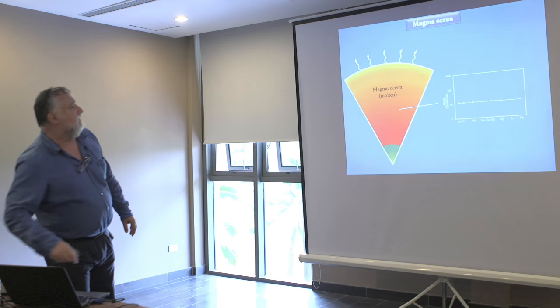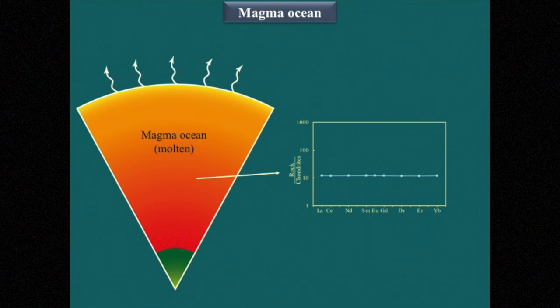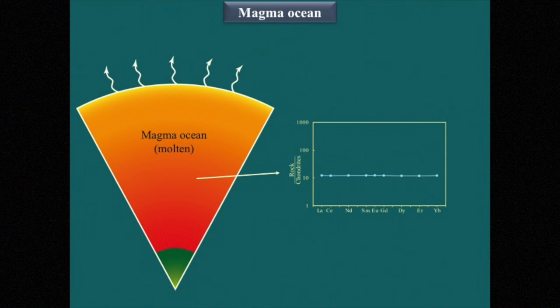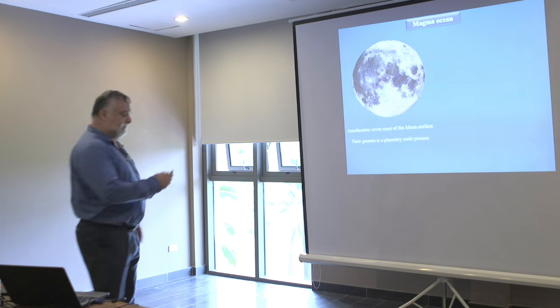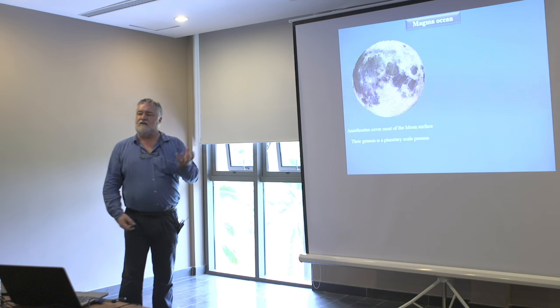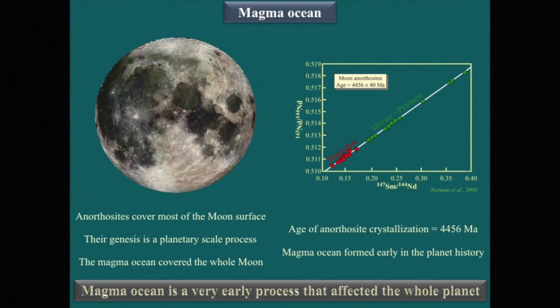If we start with a homogeneous magma ocean, we can evolve toward an anorthositic plagioclase crust with one kind of rare earth pattern, and a lower mantle with a complementary pattern. These two patterns derive from a single flat pattern at the beginning. So the Moon results from differentiation of a magma ocean. Anorthosites are found almost everywhere on the surface of the Moon, meaning this differentiation event was not local but planetary — it affected the whole Moon. The ages of these anorthosites are around 4.4 billion years.